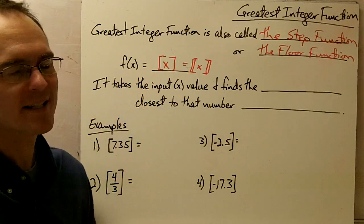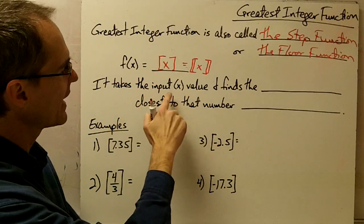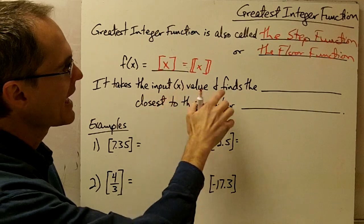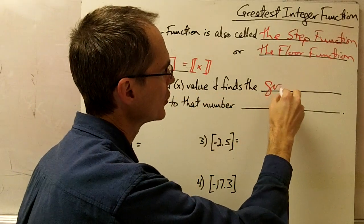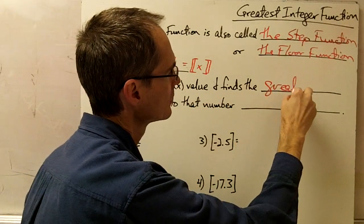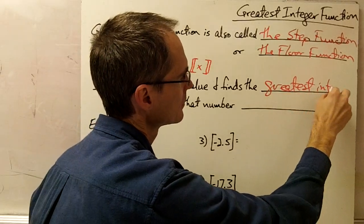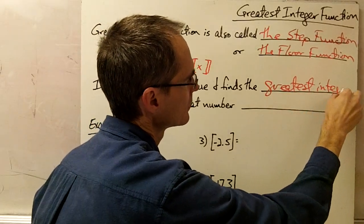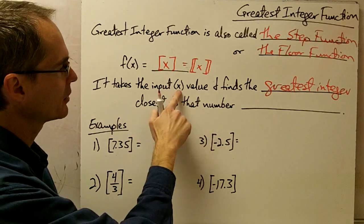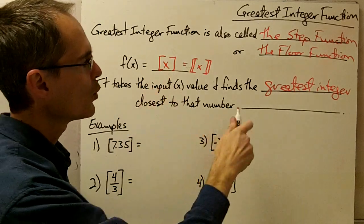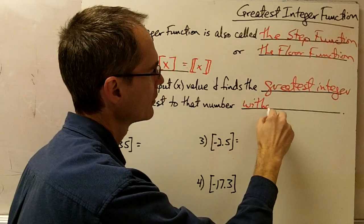What the greatest integer function does is it takes the input value — that is, it takes the x value — and it finds the greatest integer closest to that number, closest to the x value, without going over.